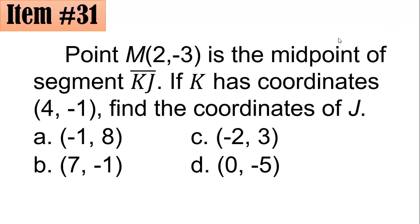Moving on to item number 31. Point M with coordinates (2, -3) is the midpoint of segment KJ. If K has coordinates (4, -1), find the coordinates of J. Is it A, B, C, or D?